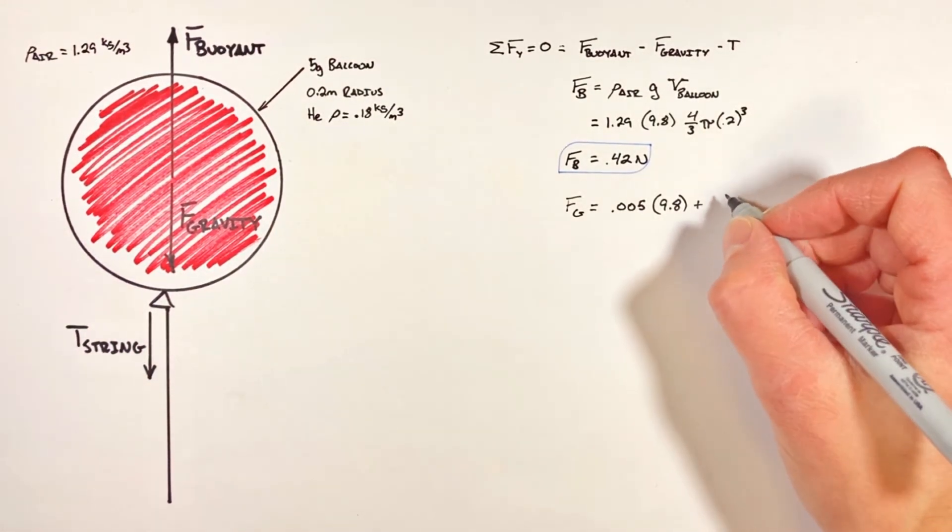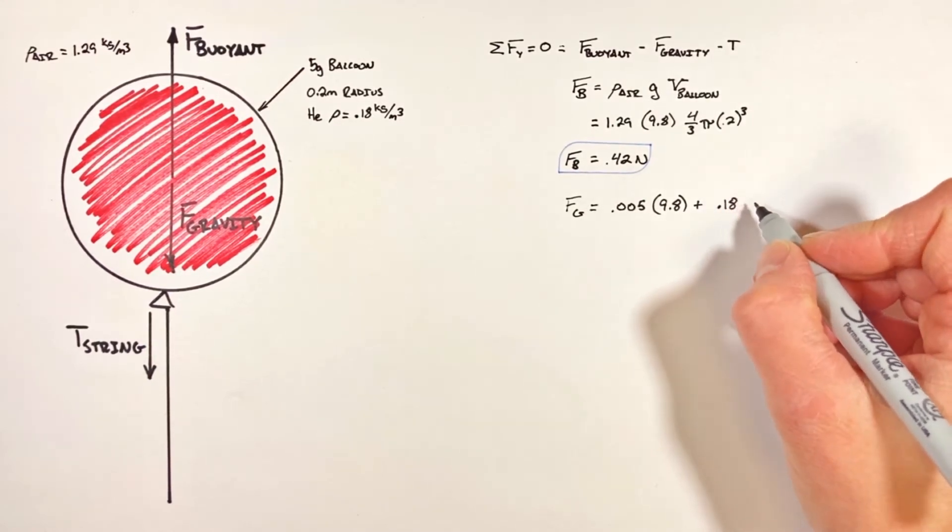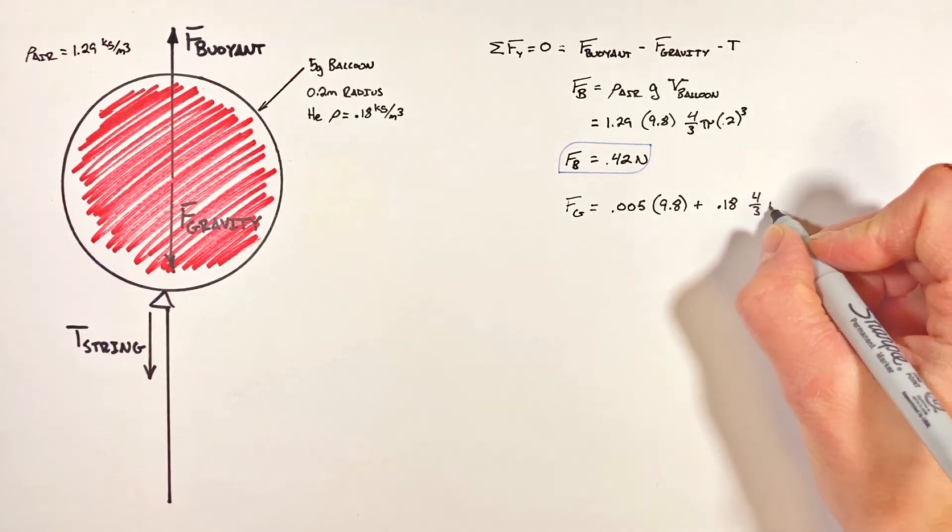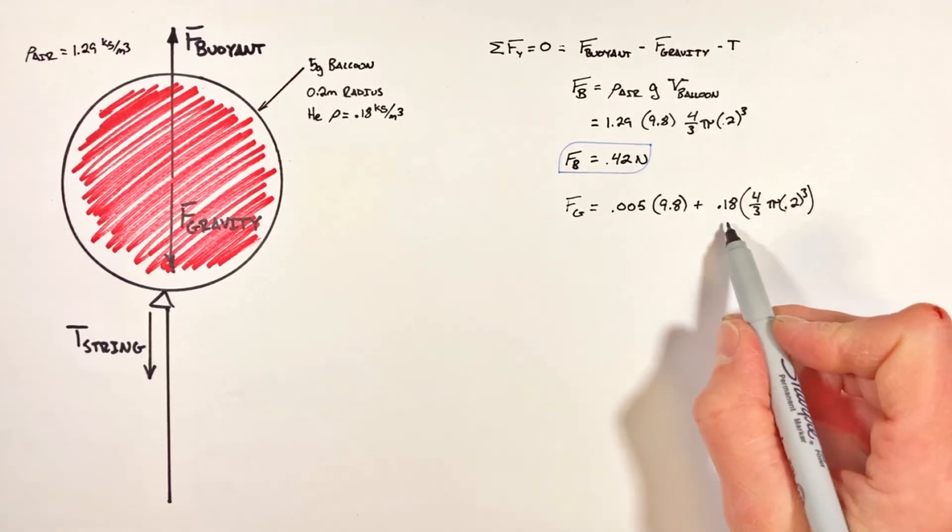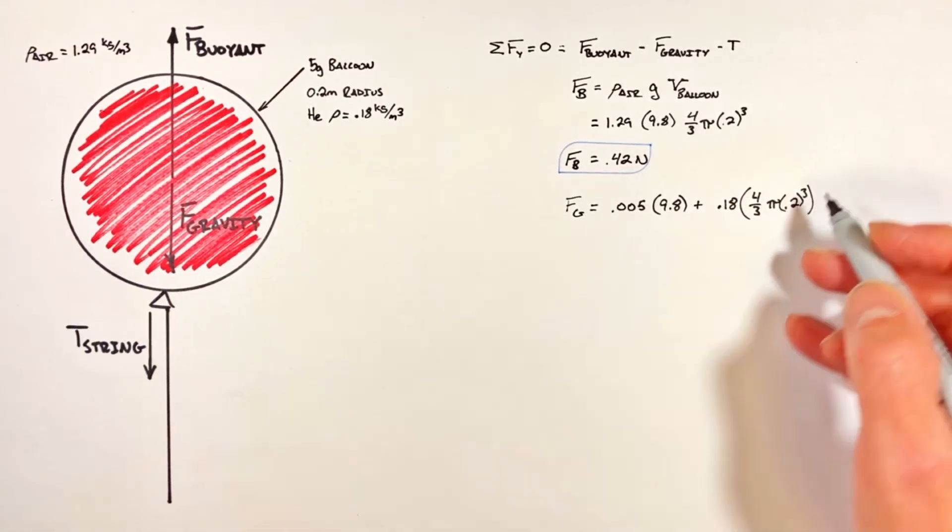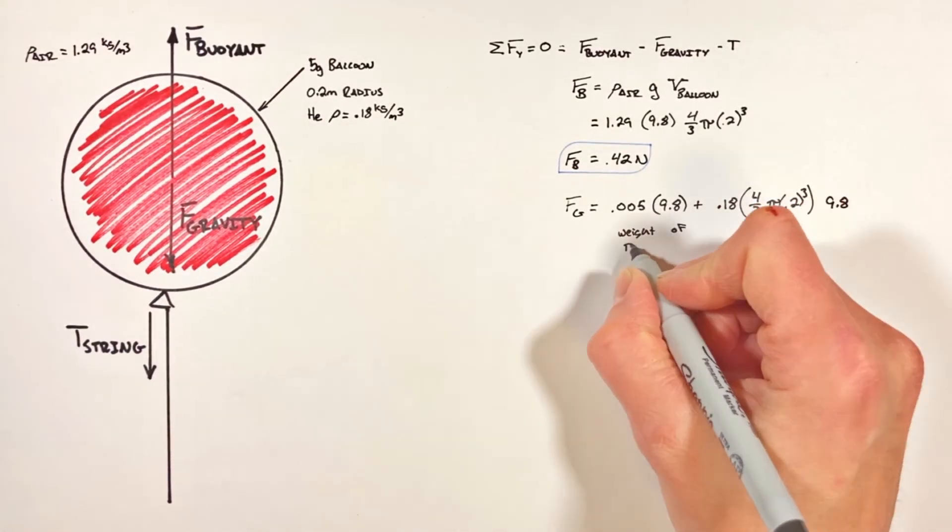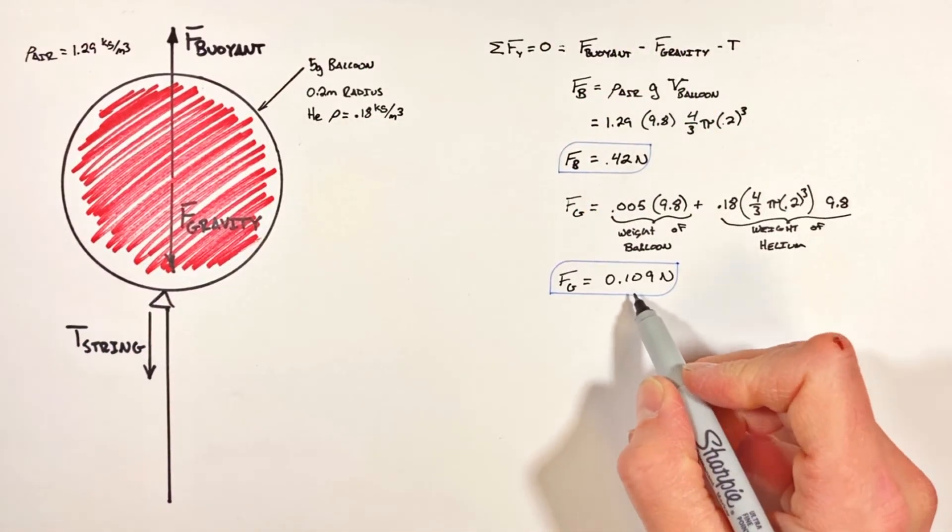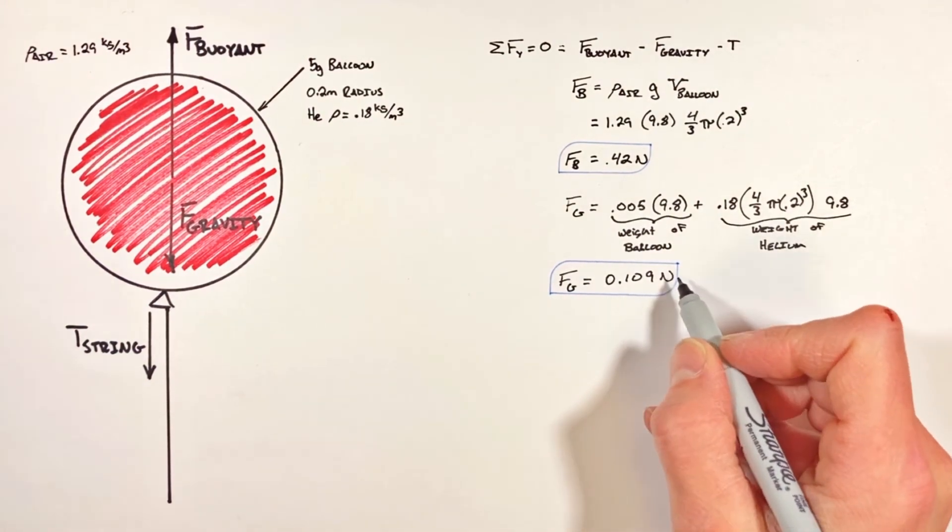The mass is given by the density of helium, 0.18, multiplied by the volume of the balloon, four-thirds pi times 0.2 cubed. This is the mass of helium. Multiplying by 9.8 gives the weight of helium. Working this out, we find the total force of gravity on everything is 0.109 newtons.